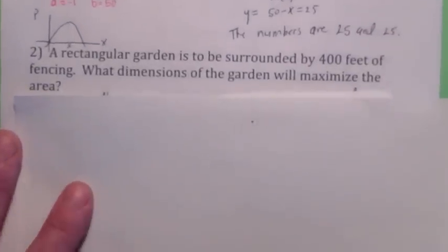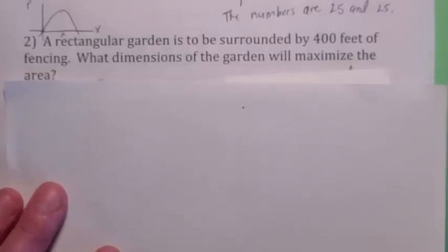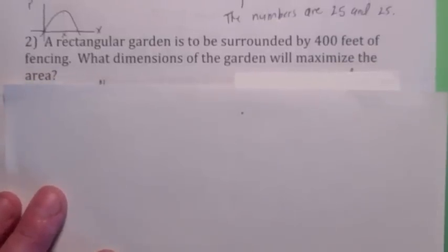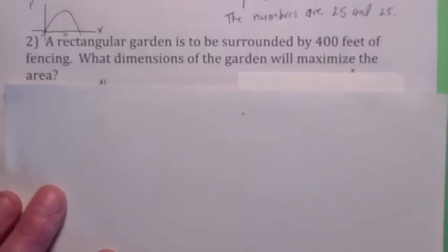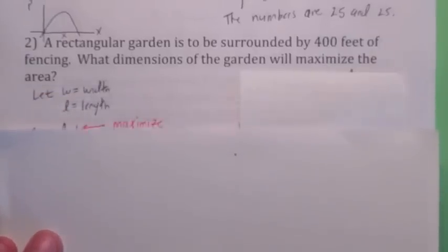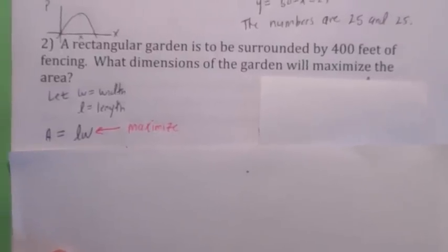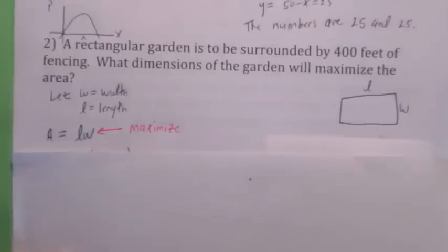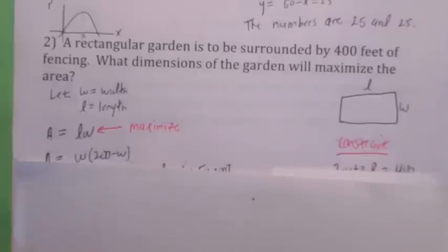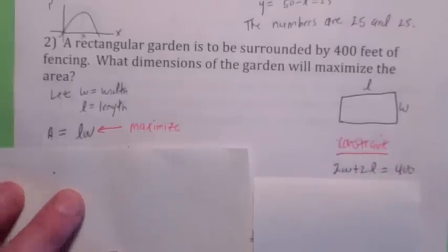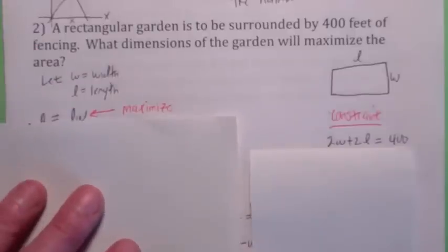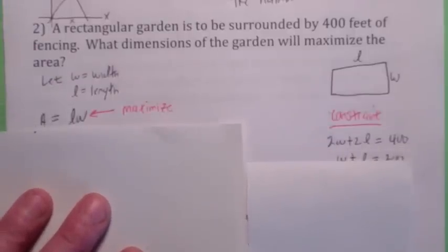This next type is pretty common. We're talking about a rectangular garden surrounded by 400 feet of fencing — that's the perimeter. The question is, what dimensions will give the maximum area? So if w is the width and l is the length, the function that involves the maximum is the area function — length times width. We need to get that in terms of one unknown. If you draw a picture of this garden, the constraint equation turns out to be that the perimeter, the amount of fencing used, is 400 feet. So I'm going to solve this for l: l equals 200 minus w.